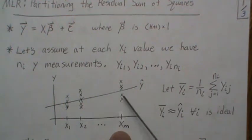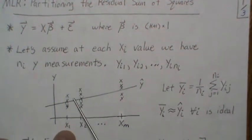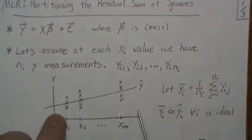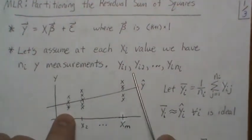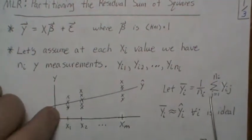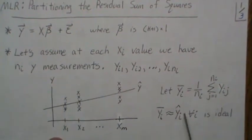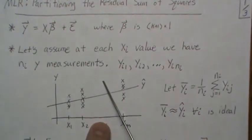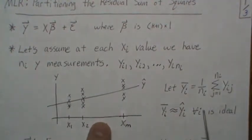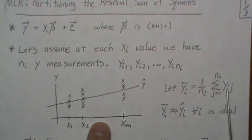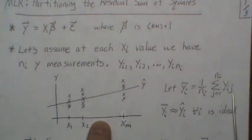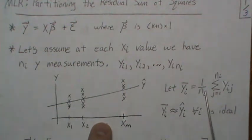Since we have unique y values at each x, we can define the mean at a particular x_i. We let y_{i·bar} represent the mean at x_i, where we sum all y_{ij} over j from 1 to n_i and divide by n_i. That gives us the mean at that particular x_i combination.